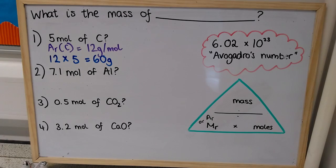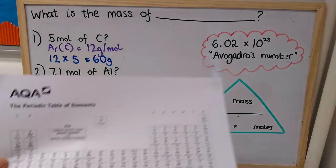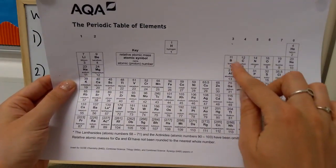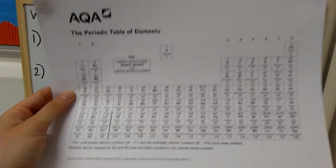Question 2 is going to be exactly the same, so I take my periodic table, and I find the relative atomic mass of aluminium, which is 27.